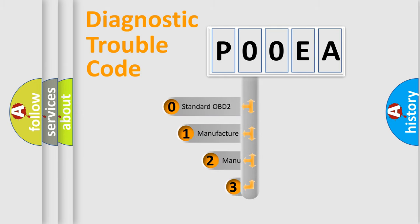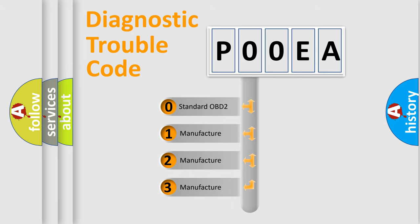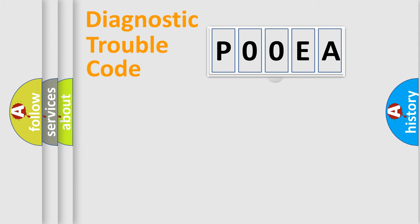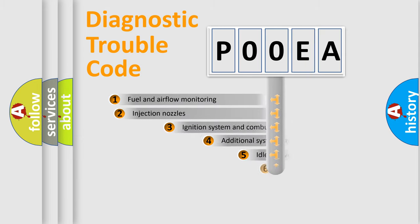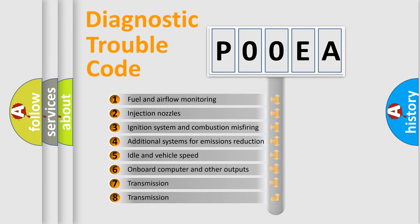If the second character is expressed as zero, it is a standardized error. In the case of numbers 1, 2, or 3, it is a more prestigious expression of the car-specific error.